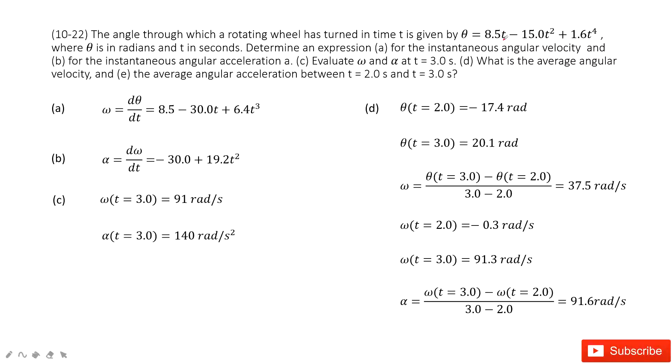This is the instantaneous function. For the first one, we need to find the instantaneous angular velocity. How can we do that? If we do the derivative of theta with respect to t, we can get the instantaneous angular velocity. So omega equals dθ/dt. This is written in the textbook. Then you just do the derivation, you get a function like that.